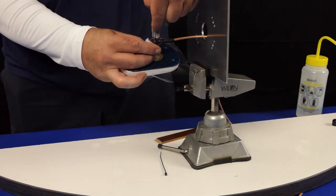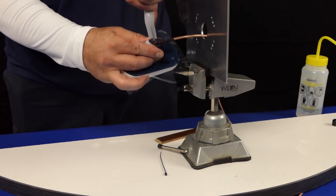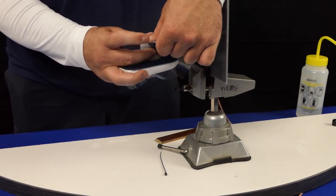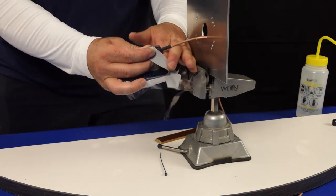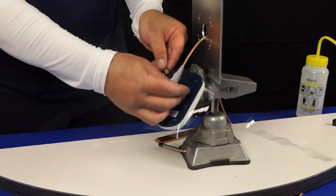Continue to wrap the self-fusing silicone tape until at least one complete wrap past the end of the stretch seal tape. Make one complete wrap over the top of the last wrap. The first and last wrap must always be a complete wrap directly over the top of the previous wrap.